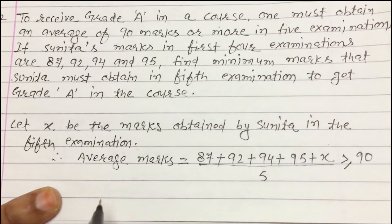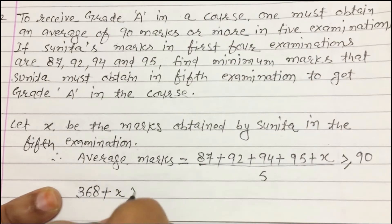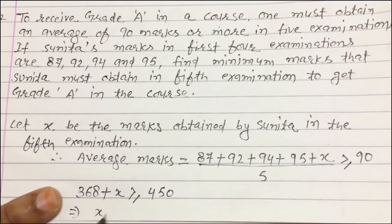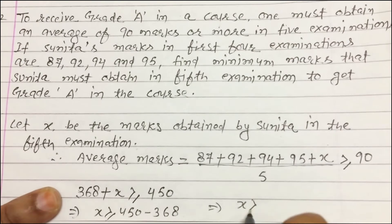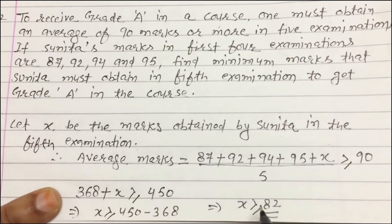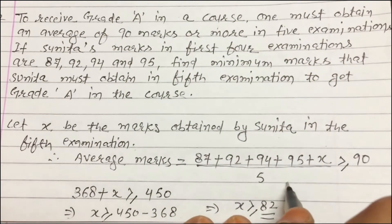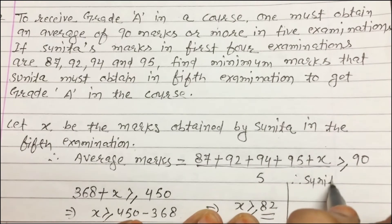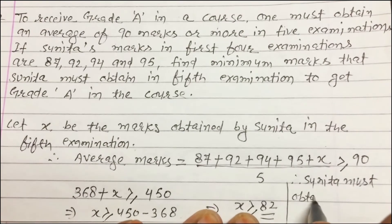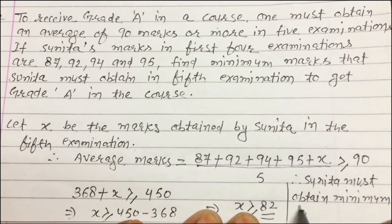So 368 + x ≥ 450. Therefore x ≥ 450 − 368, so x ≥ 82. In the last step, Sunita must obtain a minimum of 82 marks.